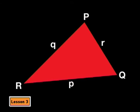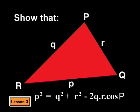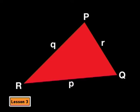Let's take triangle PQR to represent any triangle. We will try to show that in triangle PQR, P squared is equal to Q squared plus R squared minus 2QR cos P. We will start by splitting the triangle into two right angle triangles. We will draw a line from R perpendicular to PQ at point S.